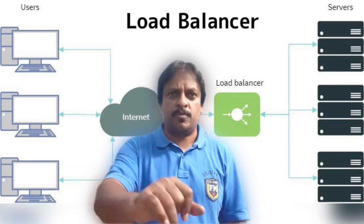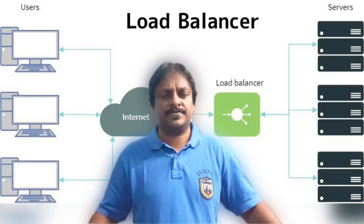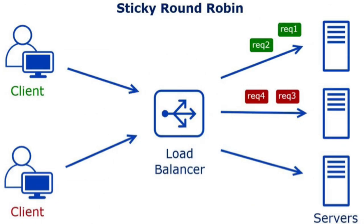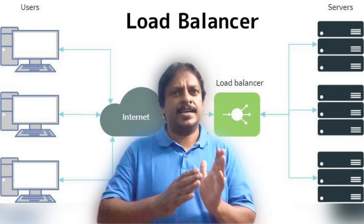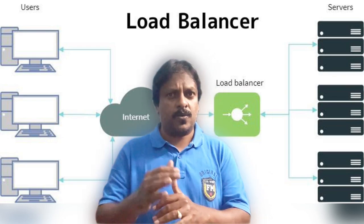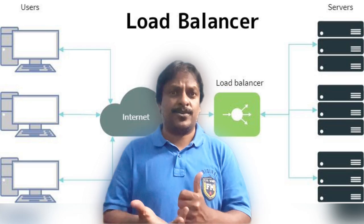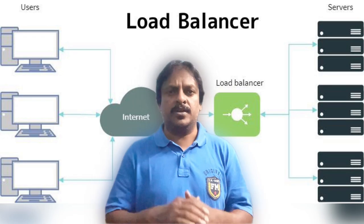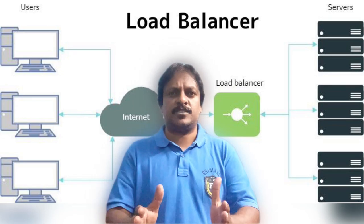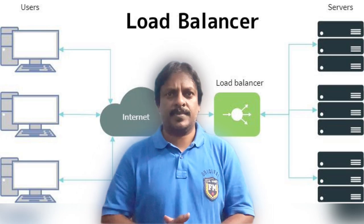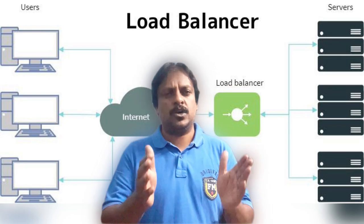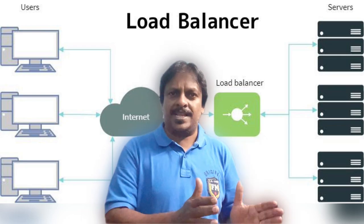Our next load balancing algorithm is sticky round robin. How it works is the request comes from the client and goes to server 1. If the same client sends another request, it will go to that same server — the request will be sticky to that particular server. That's why we call this the sticky round robin load balancing algorithm.